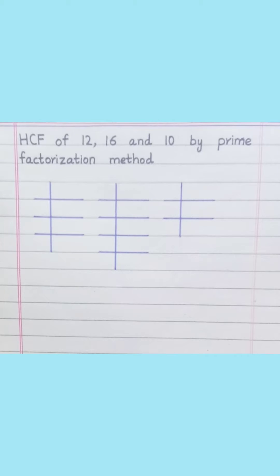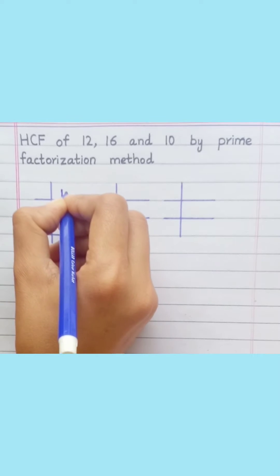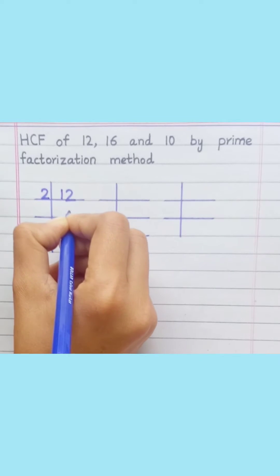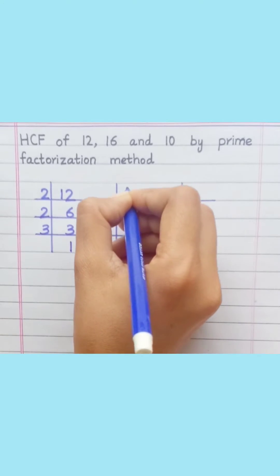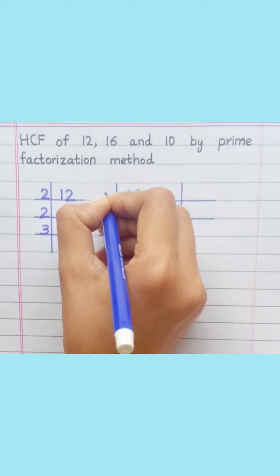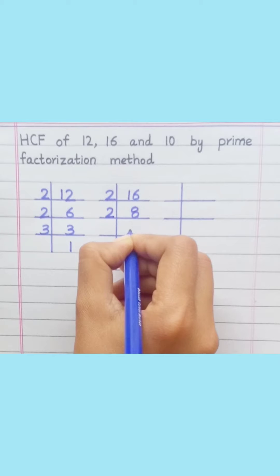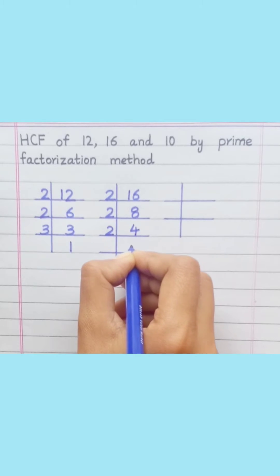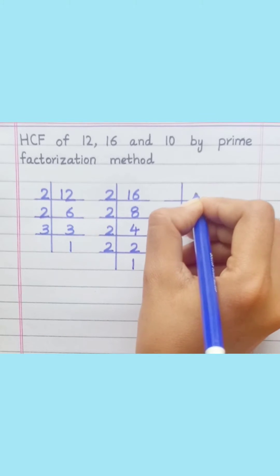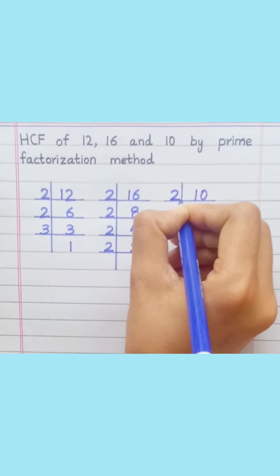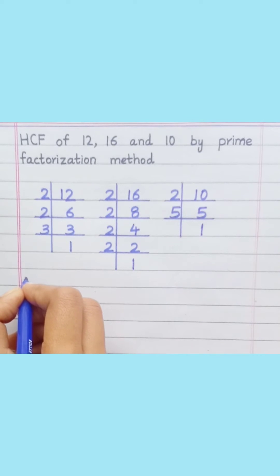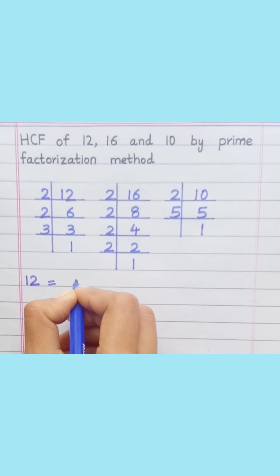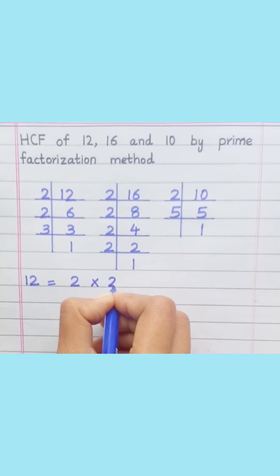HCF of 12, 16, and 10 by prime factorization method. 12: 2 sixes are 12, 2 threes are 6, 3 ones are 3. 16: 2 eights are 16, 2 fours are 8, 2 twos are 4, 2 ones are 2. 10: 2 fives are 10, 5 ones are 5. So 12 equals 2 multiply 2 multiply 3.